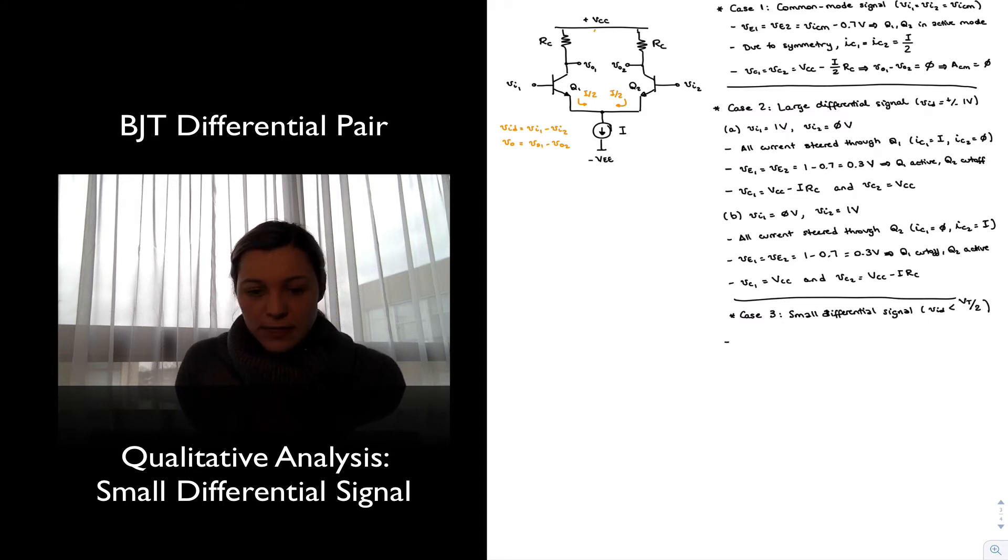In that case, we are going to have a small increase. Let's imagine that we are analyzing the case where V_in1 becomes slightly smaller than V_in2 by an amount less than 50 halves. So, there is a small increase in V_in1 with respect to V_in2.